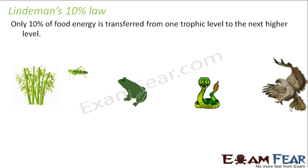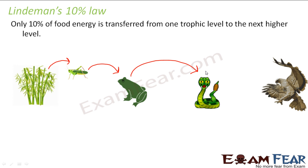That means whatever energy the plant has, only 10% of it will go to the grasshopper. Whatever energy the grasshopper has, only 10% of it will go to the frog. Again, 10% of it goes to the snake, and 10% of it finally goes to the hawk. And that is why it is never preferred to have too many levels in a food chain. So energy decreases as the trophic level increases, and therefore food chains will generally consist of 3 to 4 levels.